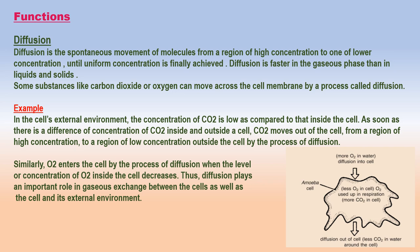Diffusion. Some substances — molecules and ions — such as carbon dioxide, oxygen, and water can move across the plasma membrane through a process called diffusion. These substances are of very small size, so they diffuse readily through the phospholipid layer of the plasma membrane. Diffusion is the spontaneous movement of molecules from a region of high concentration to one of lower concentration, until uniform concentration is finally achieved.